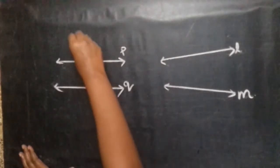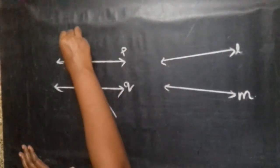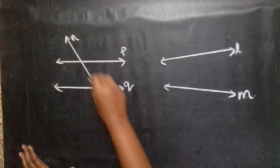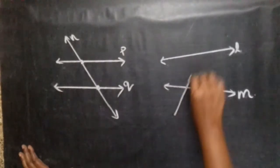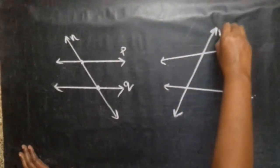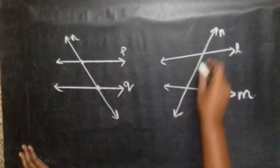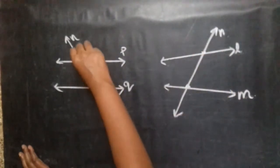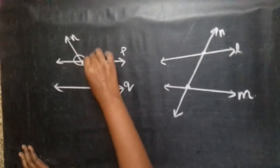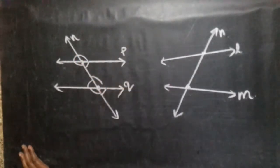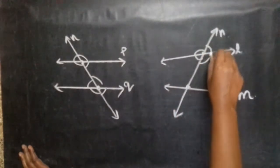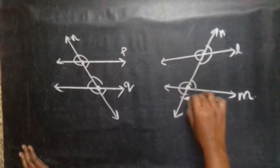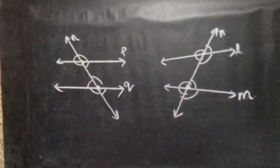For example, draw a line — which is line N — cutting through at two distinct points. Line N is the transversal line. The transversal cuts through and forms a total of 8 angles: angles 1, 2, 3, 4 on one intersection and corresponding angles at the other, giving 4 pairs which is 8 angles total.